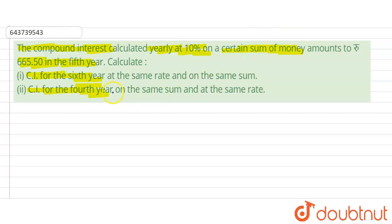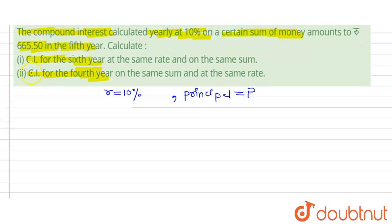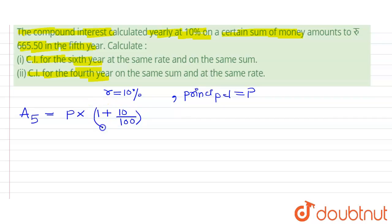So here R is given as 10%, and let the principal at the beginning of the first year be taken as P. According to the problem, the amount at the end of the fifth year, that is A5, is equal to P times (1 + 10/100) raised to 5, which gives A5 = P × (11/10)^5.